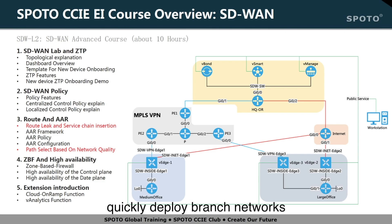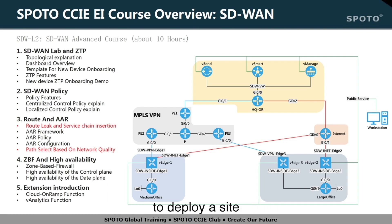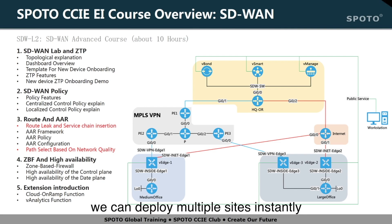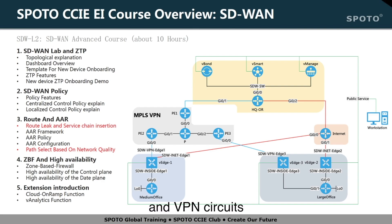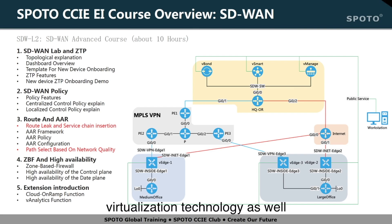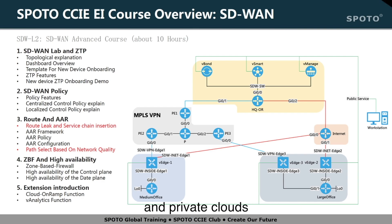SD-WAN can help us quickly deploy branch networks. It may take a week to deploy a site in a traditional way, but now using the SD-WAN solution, we can deploy multiple sites instantly. SD-WAN achieves intelligent path selection in the enterprise network environment by fully utilizing internet, MPLS, and VPN circuits. SD-WAN also uses virtualization technology, and the solution can be deployed in public and private clouds.